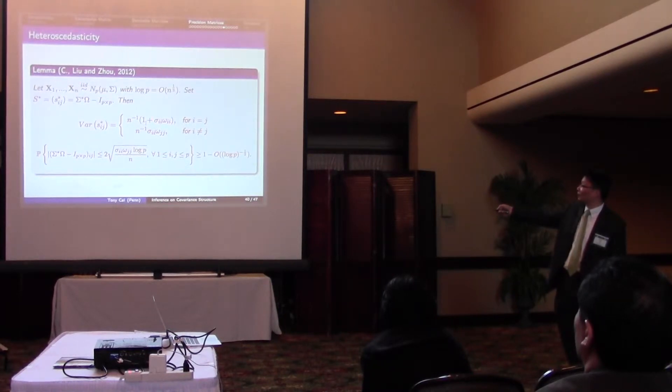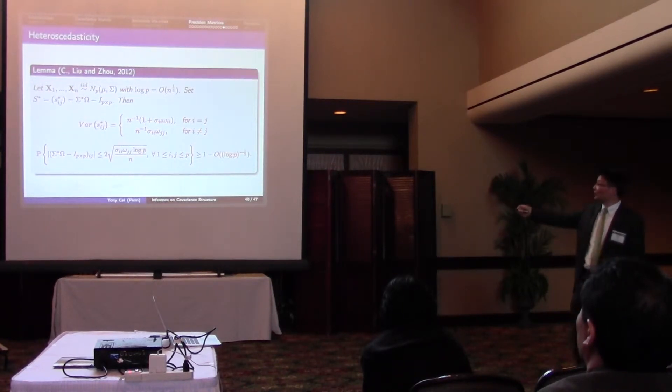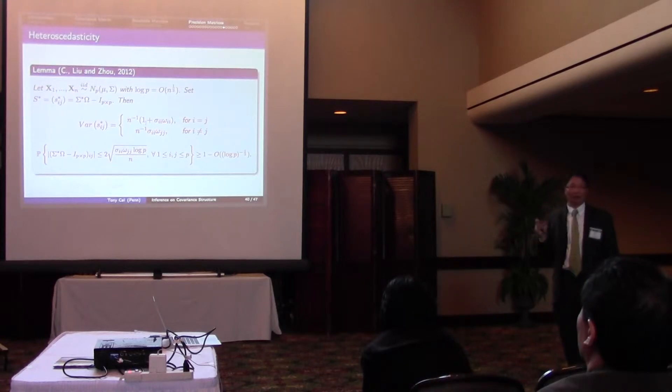It turns out the variance has two different kinds of expressions, one for the diagonal elements and one for the off-diagonal elements. But the key here is that it depends on the diagonal elements of the population covariance matrix and also the diagonal elements of the precision matrix.